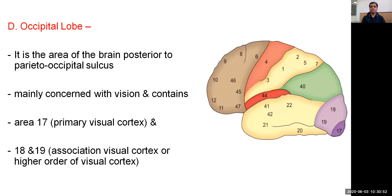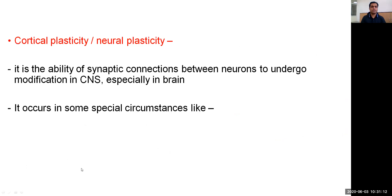The last lobe is the occipital lobe — the area of the brain posterior to the parieto-occipital sulcus. It is mainly concerned with vision, containing areas 17, 18, and 19. Area 17 is the primary visual cortex, while areas 18 and 19 are the association visual cortex or higher-order visual cortex.